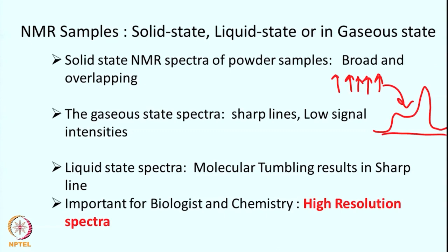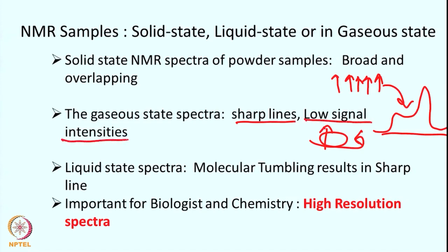Solid samples require a different approach to NMR spectroscopy. In this course we are not going to deal too much with solid state — we will give some idea about it but treat it exclusively in a subsequent course. For gaseous samples, molecules tumble fast giving sharp lines; however, the number of spins present is low, so signal intensity is low. This is also not a preferred way of doing NMR spectroscopy.